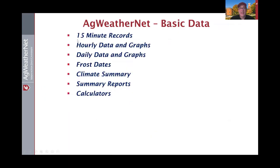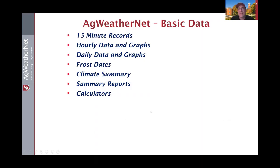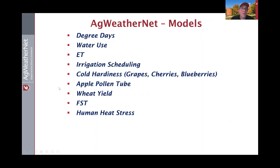Basic data we collect is 15-minute records which can be seen as hourly, daily, monthly, or even annual charts or tabular data. We can produce frost date reports and climate summaries of specific stations or summary reports for the entire network. We have various calculators on our web portal for degree days, evapotranspiration, and precipitation, which leads into the models we support.